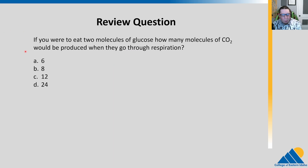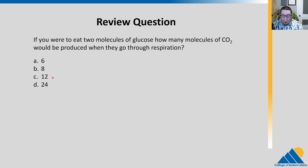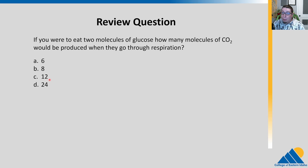Review question: if you were to eat two molecules of glucose, how many molecules of CO2 would be produced when those molecules go through respiration? Pause the video and think about that. CO2 is produced by chopping carbon molecules off of glucose, so the question is: how many carbons are in glucose? Glucose is a six-carbon sugar and we have two of those, so we would produce 12 molecules of CO2. The key takeaway is that CO2 results from cutting the carbons off of glucose.